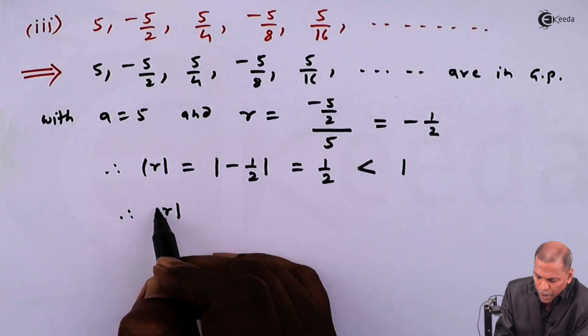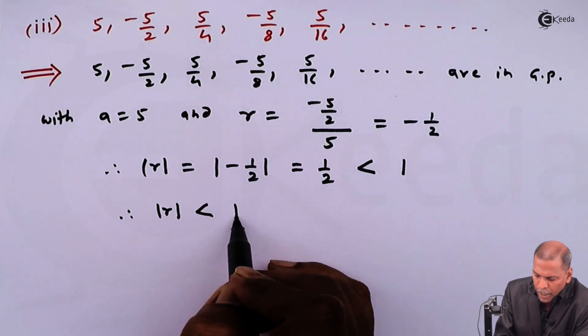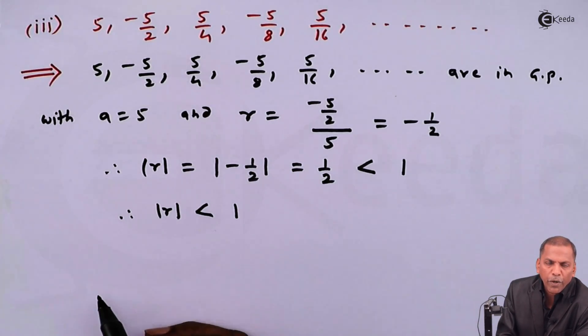Therefore in this case, modulus of r less than 1. It means sum to infinity of a GP exists.